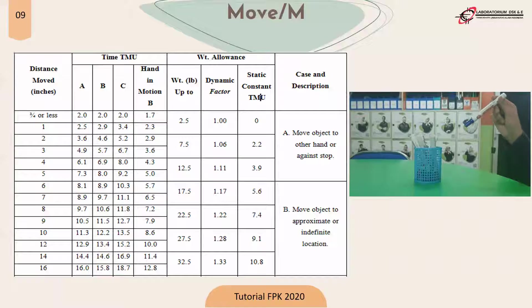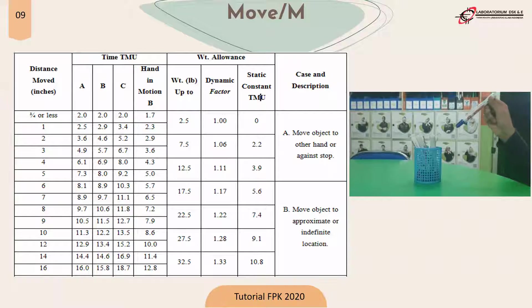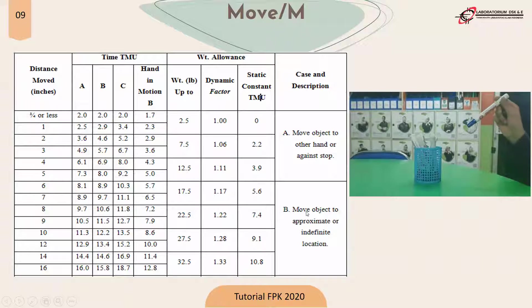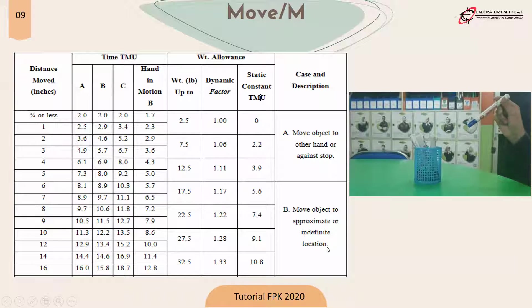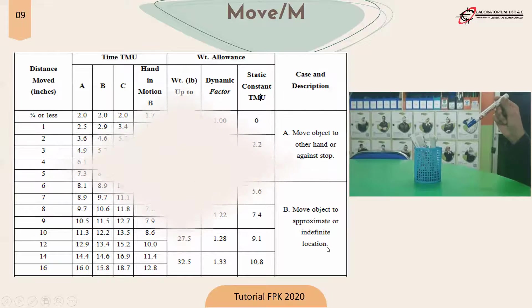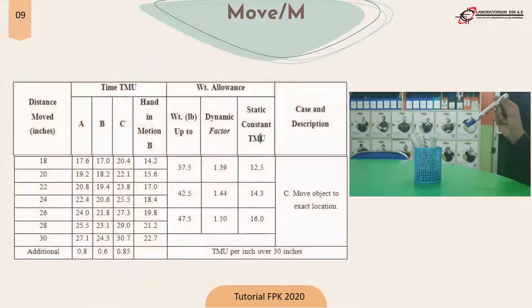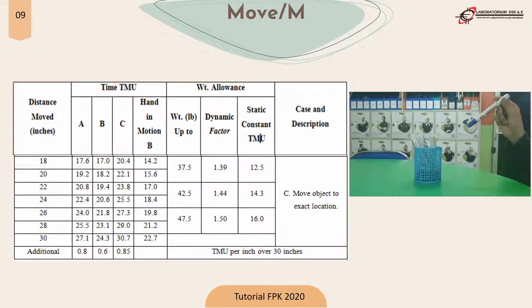The next motion element is move. The cases in move motion are divided into three: Case A is move object to the other hand or against a stop; Case B is move object to an approximate or indefinite location; and Case C is move object to an exact location.